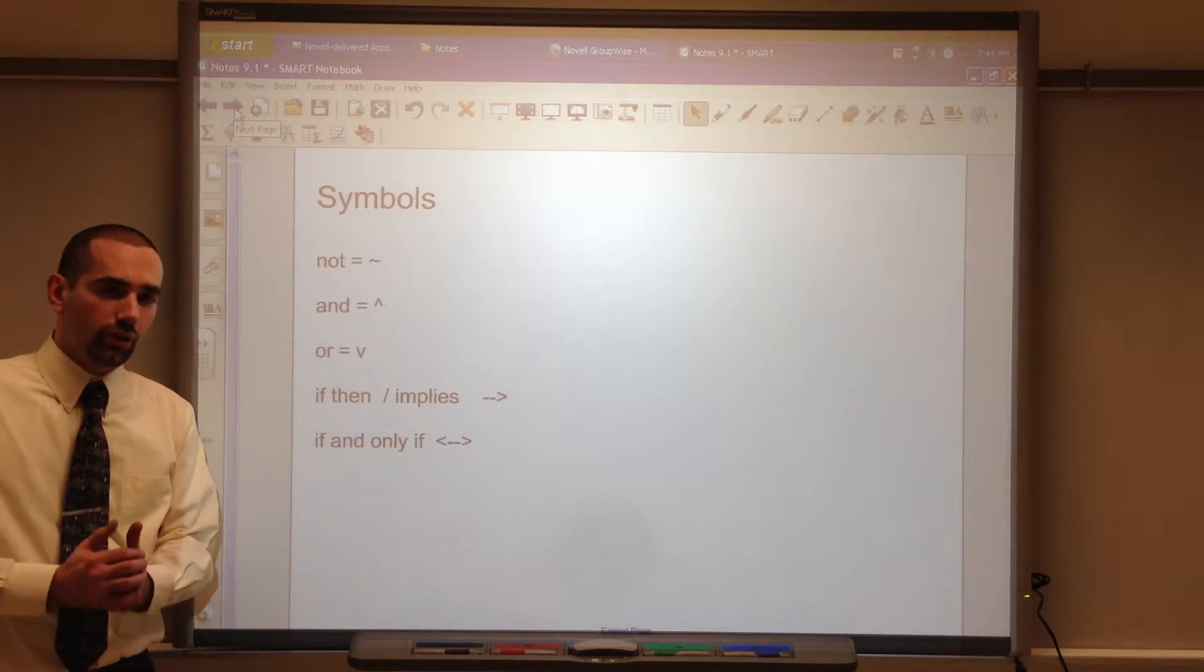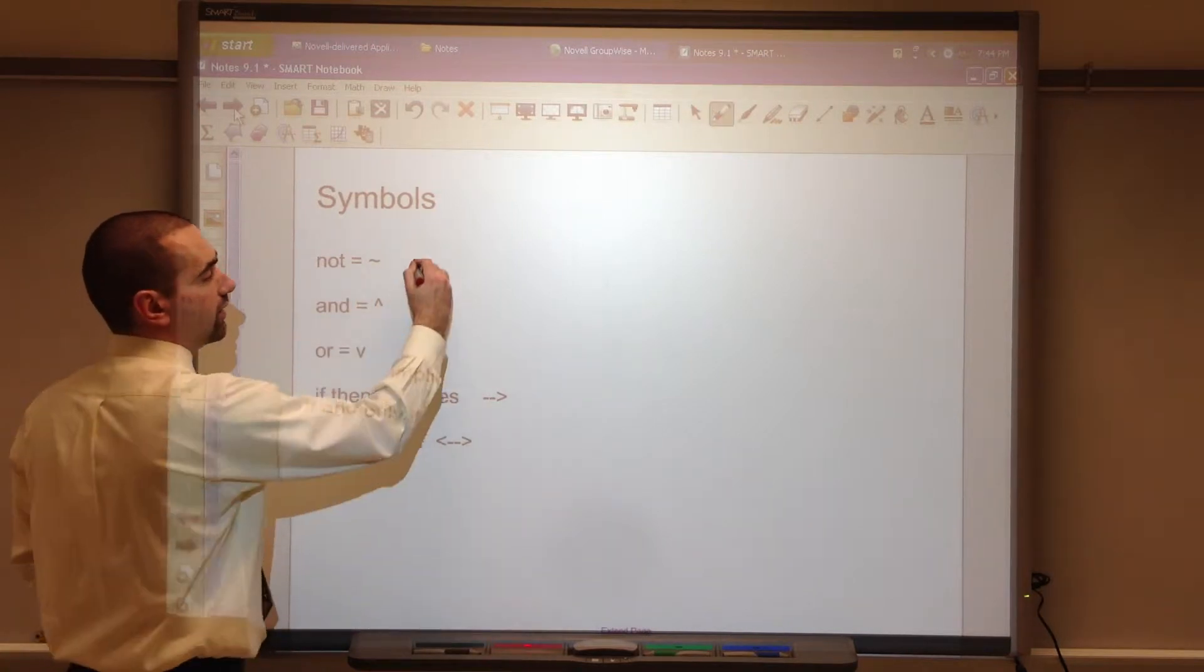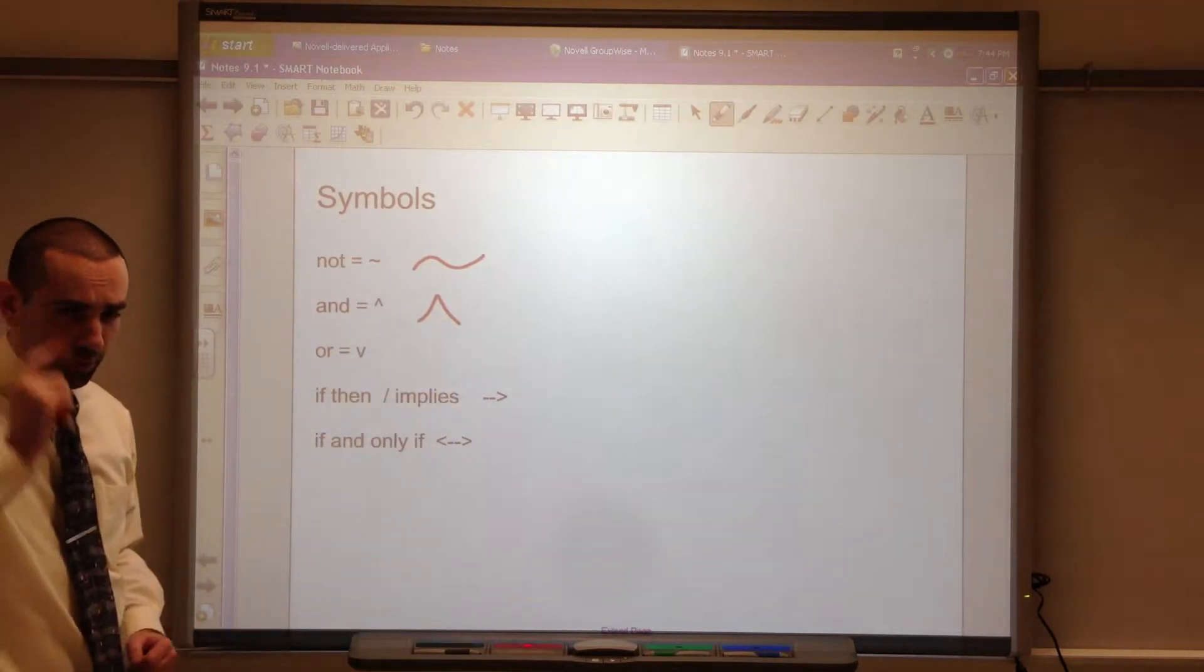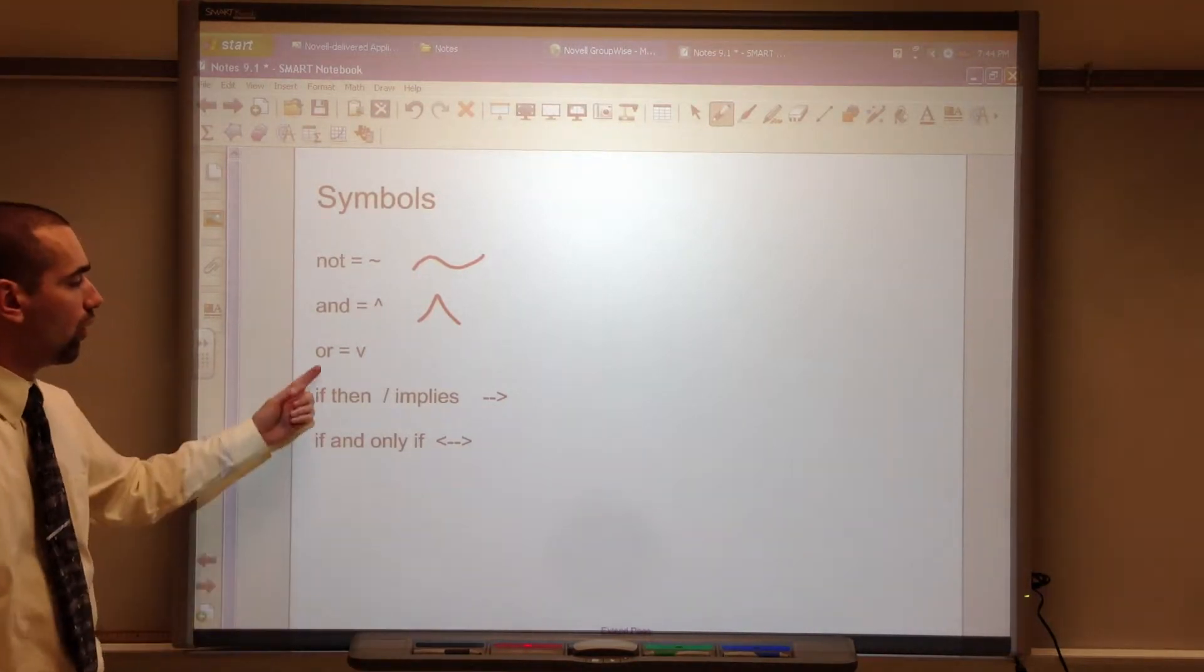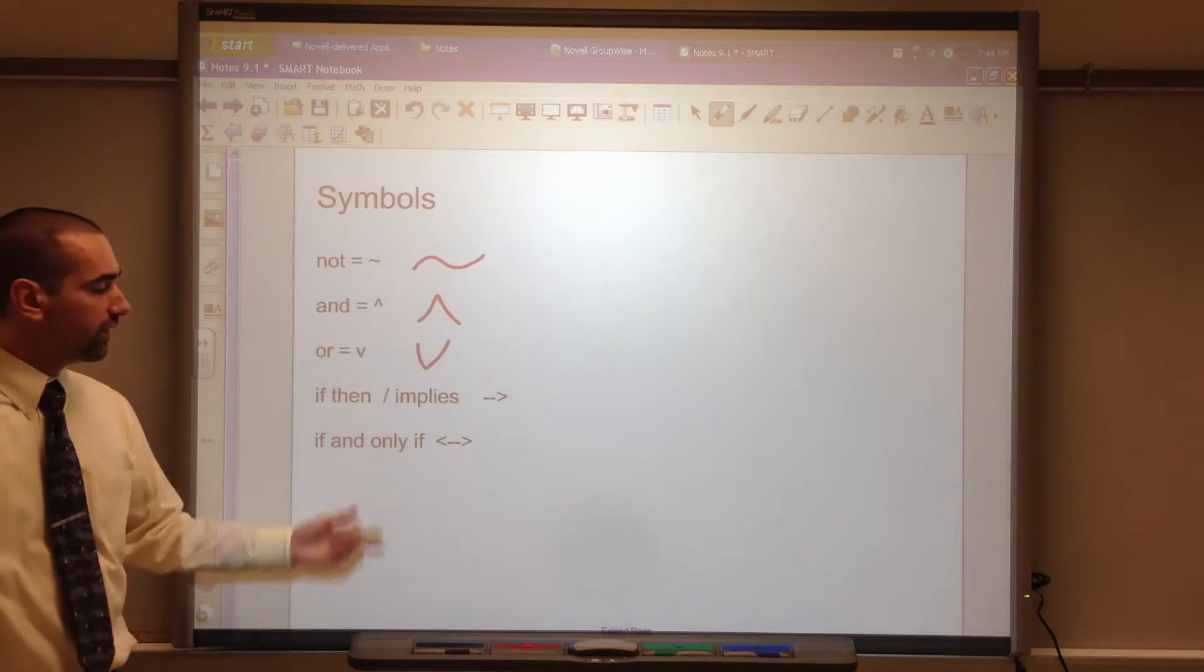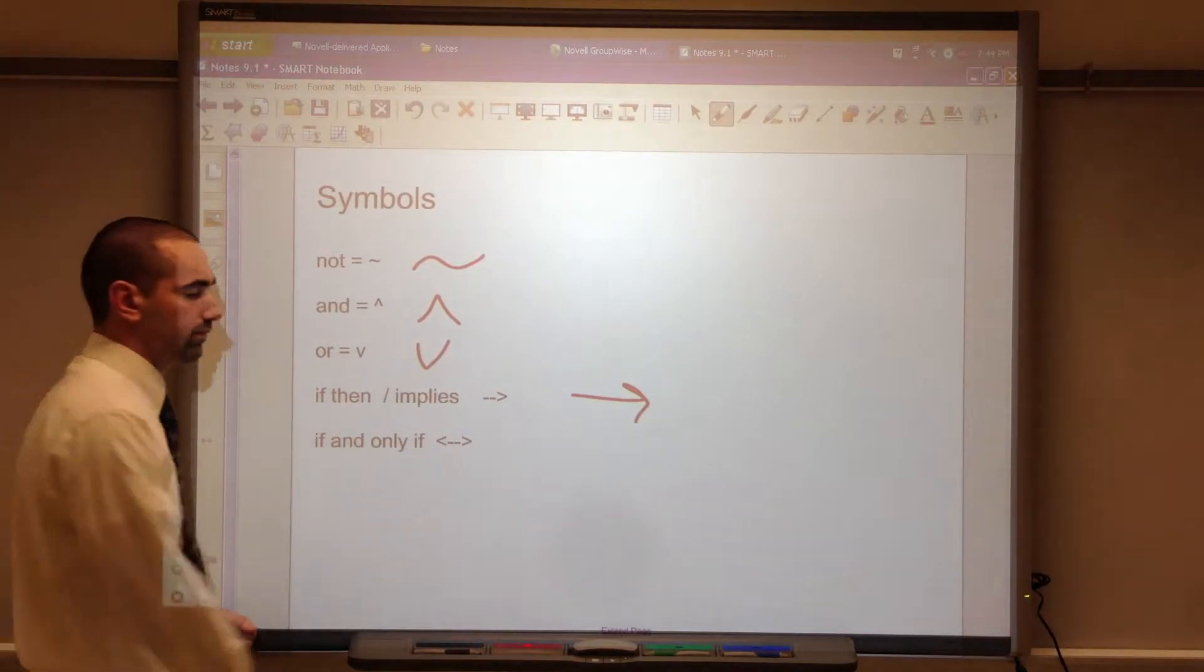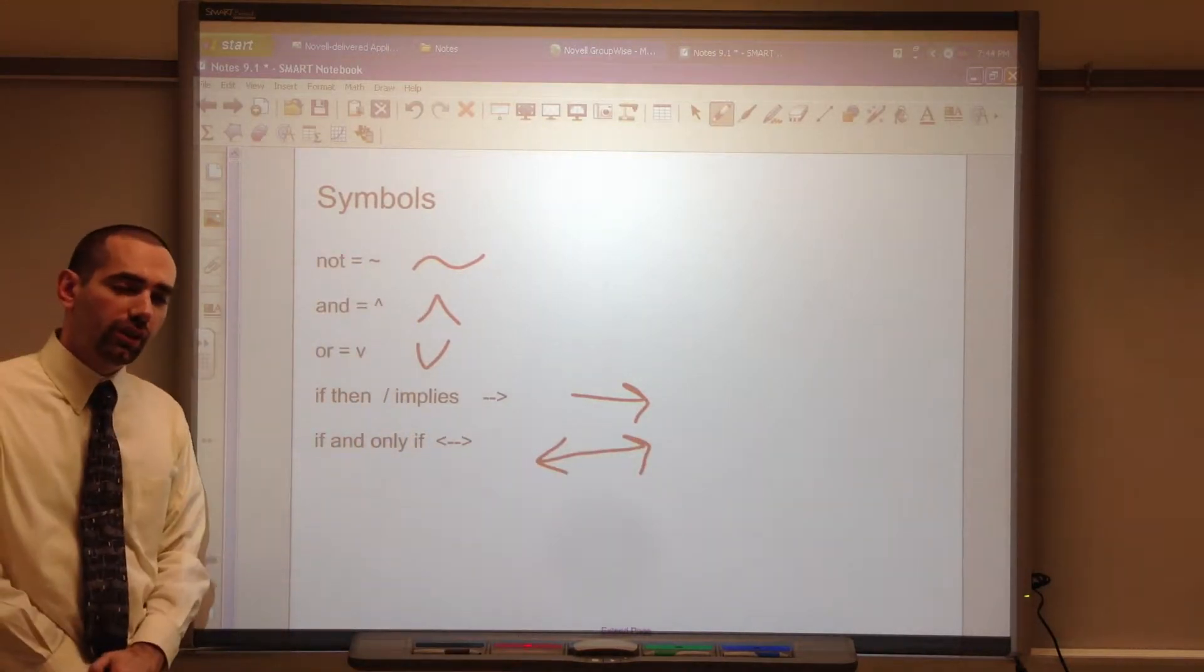Let's go over a variety of symbols we're going to be using today. Not is represented by the tilde, a little wavy line. And looks like an upside down V. One thing that helps me remember which one's and is that it looks like the capital letter A. Or is a V. If then, also known as implies, is an arrow. If and only if is a double-sided arrow. These are all the symbols we're going to be looking at today.